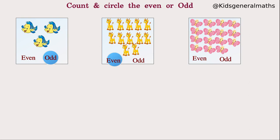Next they give us butterflies. We are going to count them: 1, 2, 3, 4, 5, 6, 7, 8, 9, 10, 11, 12, 13, 14, 15. So how many butterflies? 15 butterflies. Is 15 an even number or odd number? 15 is an odd number — we circle 'odd'.